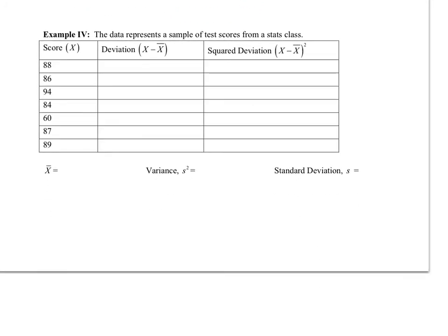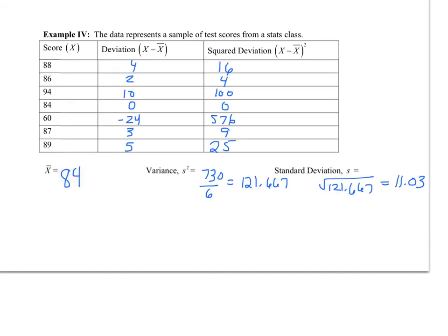In example 4, we are given a data set. Find the deviation, square deviation, variance, and standard deviation. When we look at our data, that score of 60 sticks out — it is way lower than the average, it really stands out in terms of deviation, and especially in square deviation. When I find my variance, I add up all square deviations and divide by 6, which is one less than my 7 data points, then take the square root to get the standard deviation. The standard deviation of 11 tells me that on average the scores are 11 units from the mean — yet the majority of scores are clustered in the 80s, just a few points from the mean, showing that the score of 60 is skewing the data.